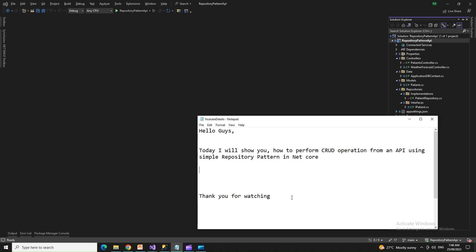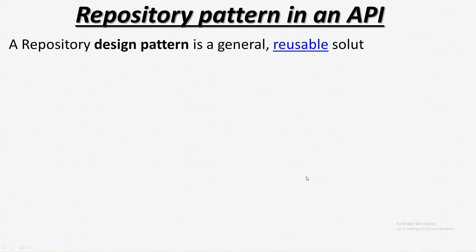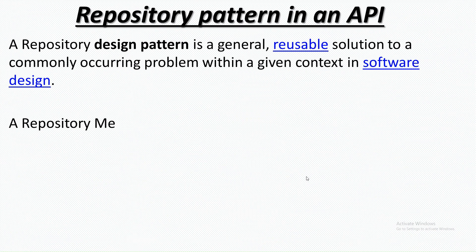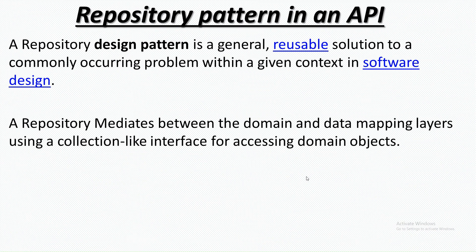All the insert, update, delete, and search operations go there, and then we present results to the client. A repository is a design pattern — a general reusable solution to a commonly occurring problem within a given context. In software design, a repository mediates between the domain and the data mapping layers using a collection-like interface for accessing domain objects.